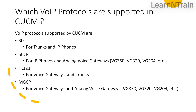Which VoIP protocols are supported in CUCM? VoIP protocols supported by CUCM are: SIP, for trunks and IP phones; SCCP, for IP phones and analog voice gateways such as VG350, VG320, VG204, etc.; H.323, for voice gateways and trunks; and MGCP, for voice gateways and analog voice gateways such as VG350, VG320, VG204, etc.